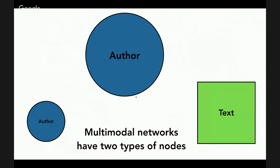When we construct a network, we can have a single-mode network where all nodes are the same thing, or multimodal networks where there are different kinds of things — for example, authors and texts, or authors and publishers. Network graphs are simplifications of the data. You don't tend to get network graphs with hundreds of kinds of nodes because they become so dense as to be unreadable.